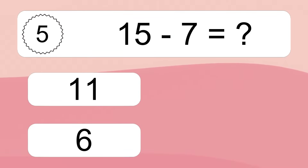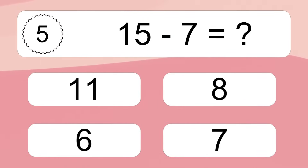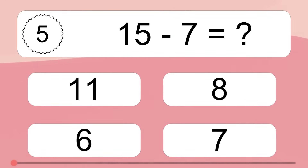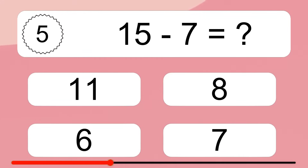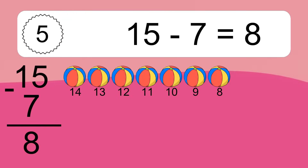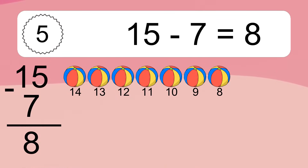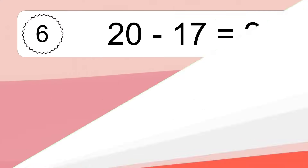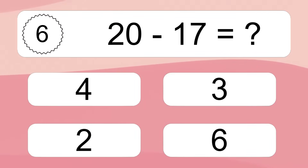15 minus 7 equals what? 15 minus 7 equals 8. Let's count it. 14, 13, 12, 11, 10, 9, 8.